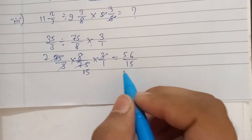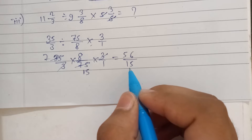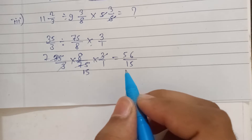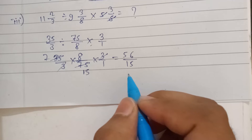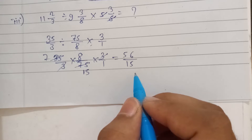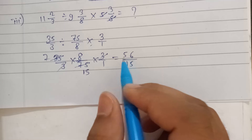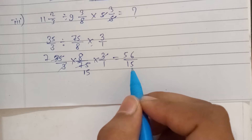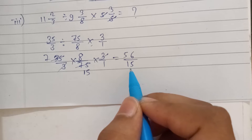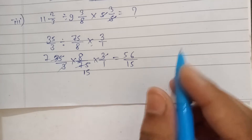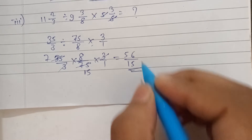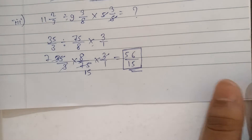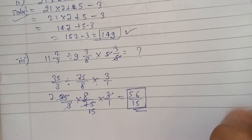No more cancellation is possible, so 56 by 15 is our answer for the third question. Now we'll move on to our fourth question.